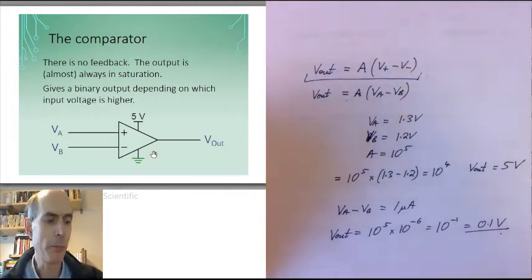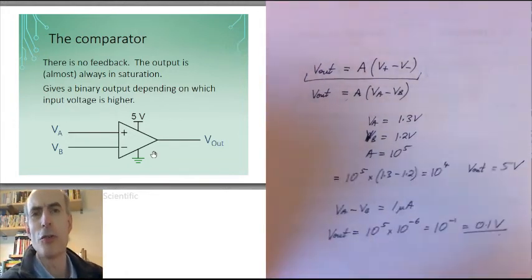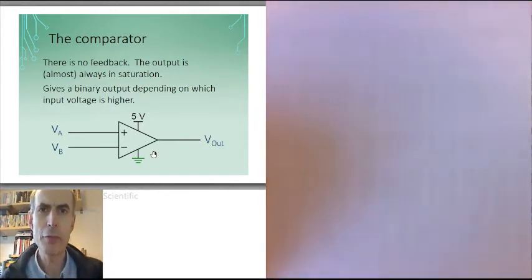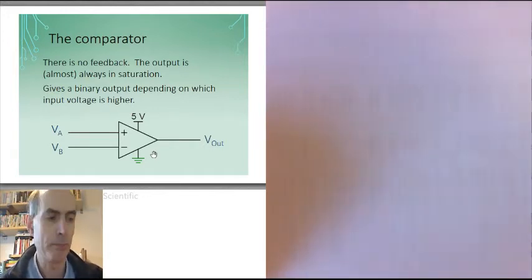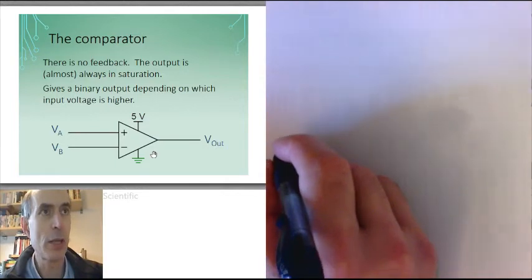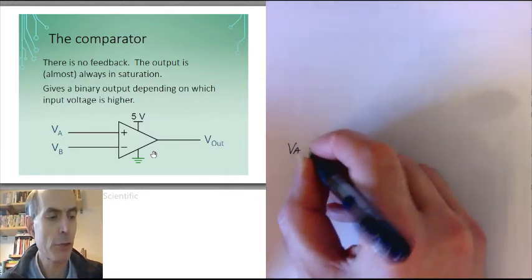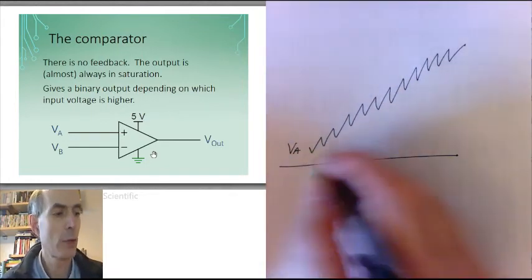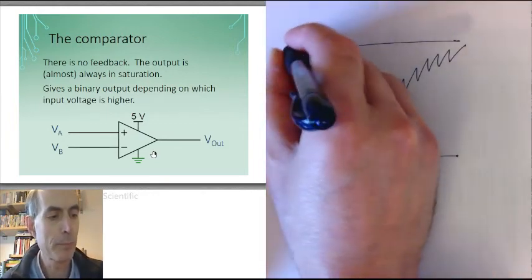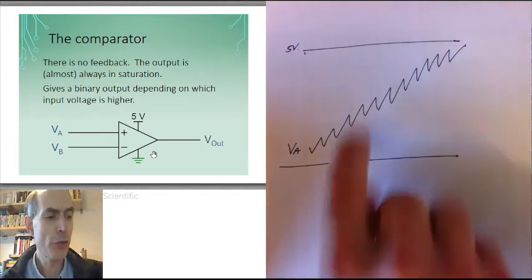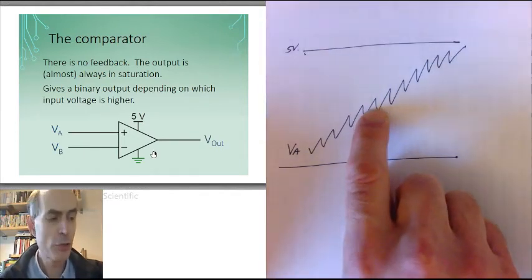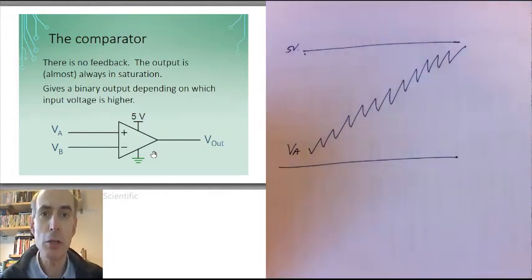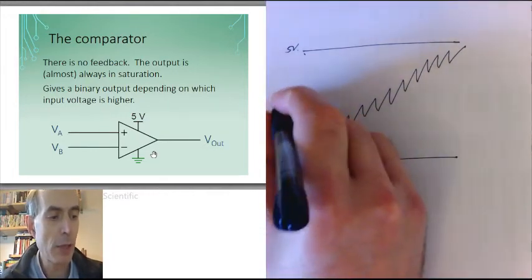There's another slight problem with this very simple form of comparator as well, and that is that it's often used as an interface between the analogue world and the digital world. Now real analogue signals always have some noise associated with them. So our real analogue signal, say VA, might be doing this kind of thing as it goes up between 0 volts and, in this case, 5 volts. And what we want to do is turn this into a digital signal which tells us whether VA is above or below some logic threshold, maybe, let's say, 2 volts.